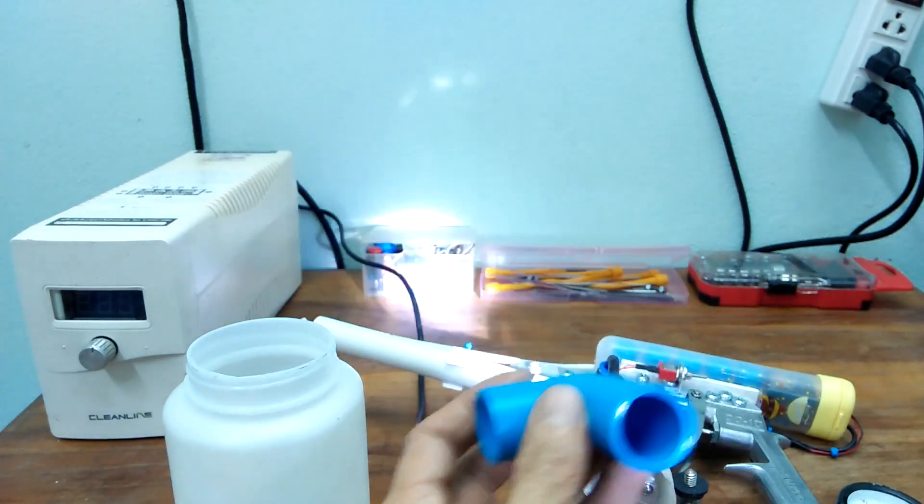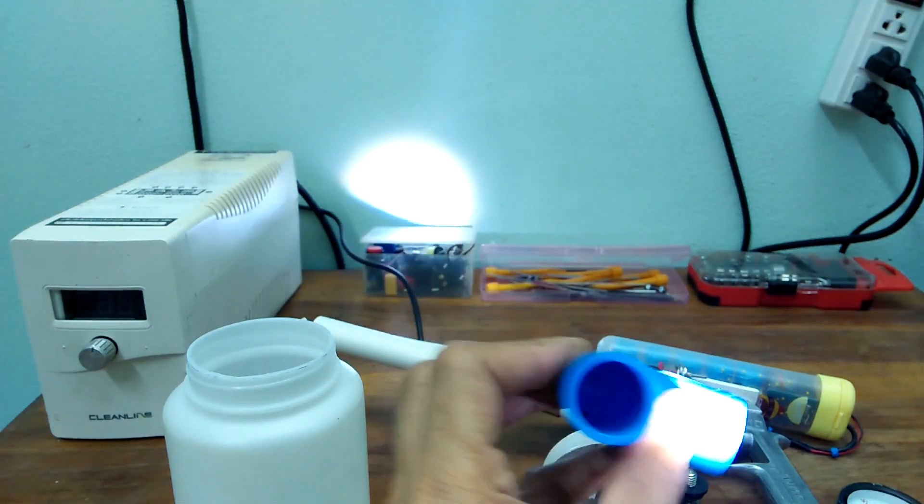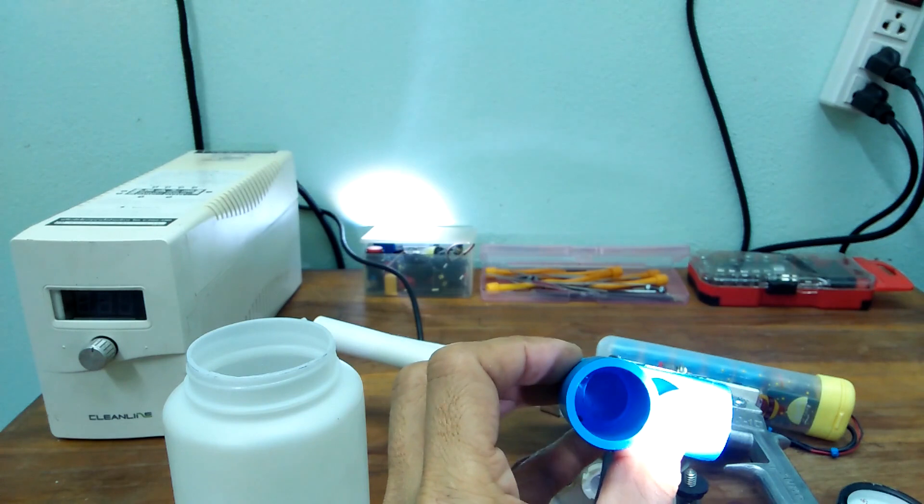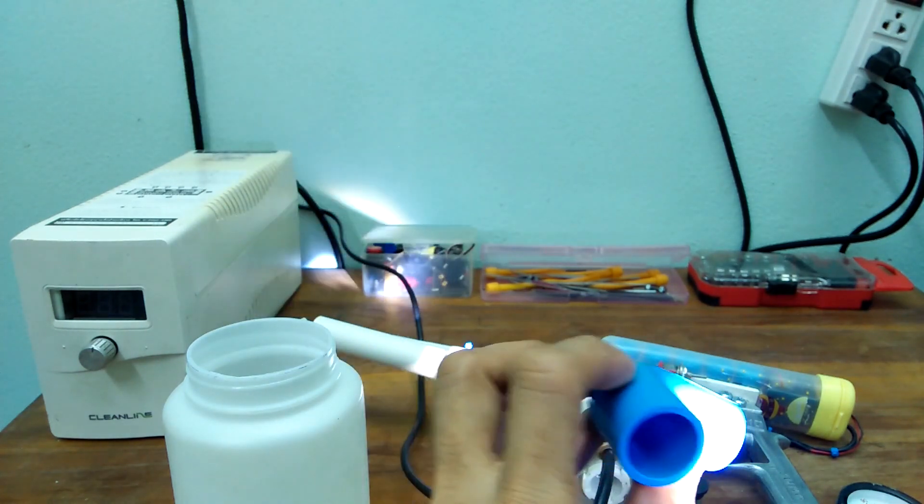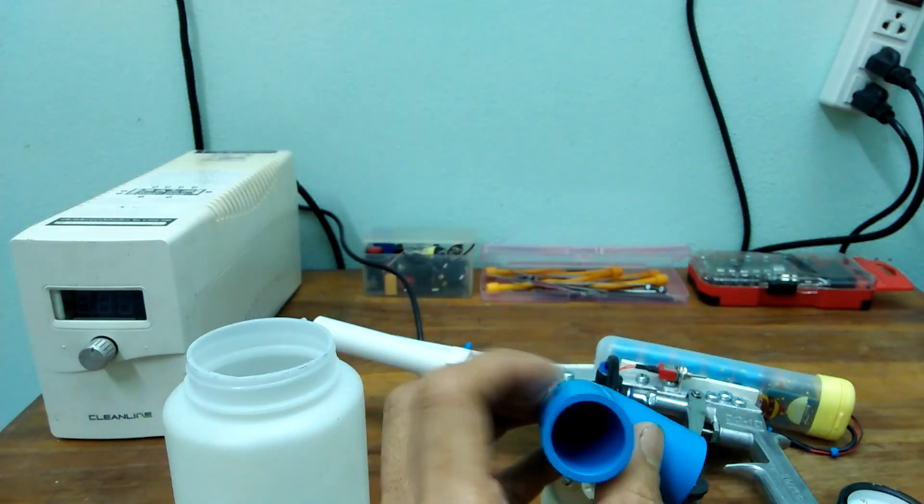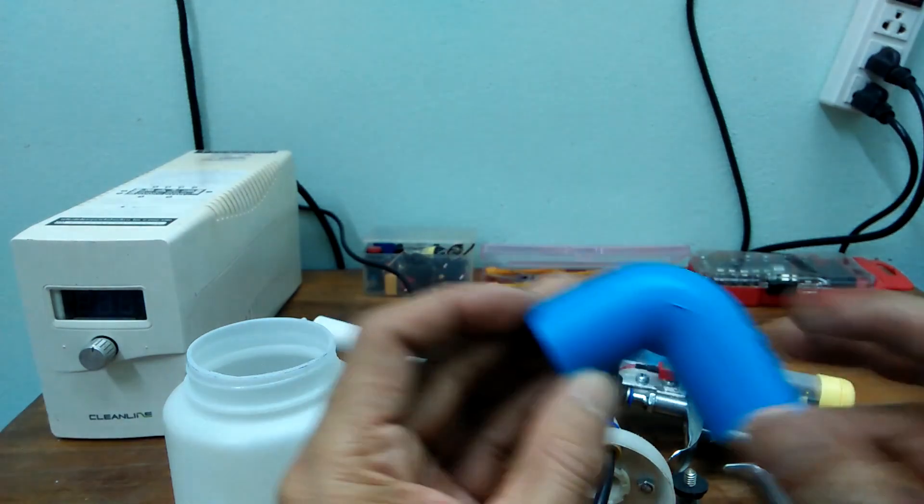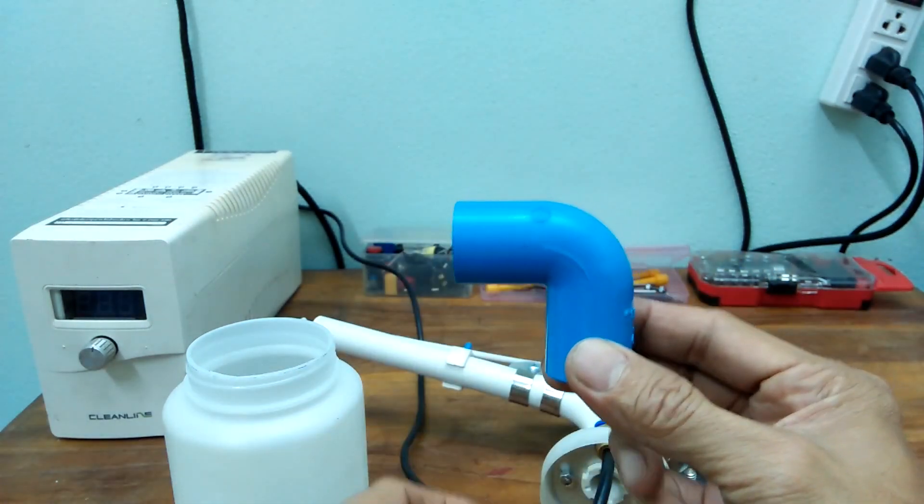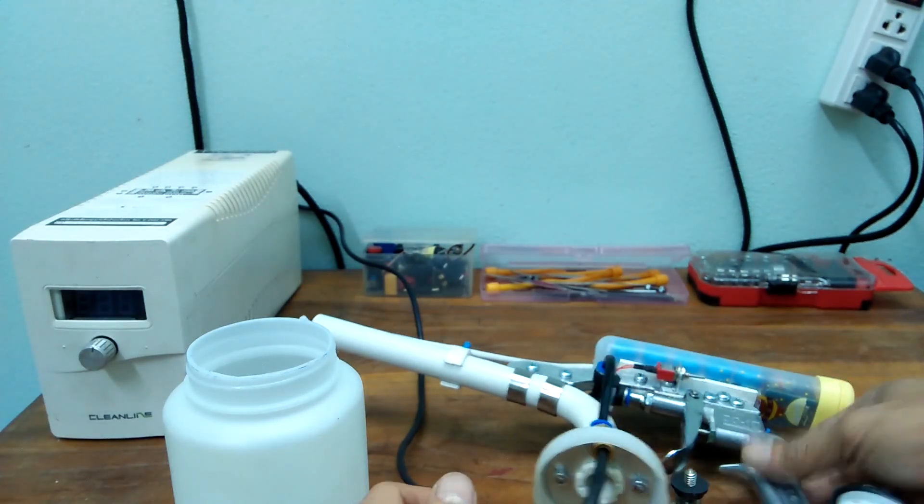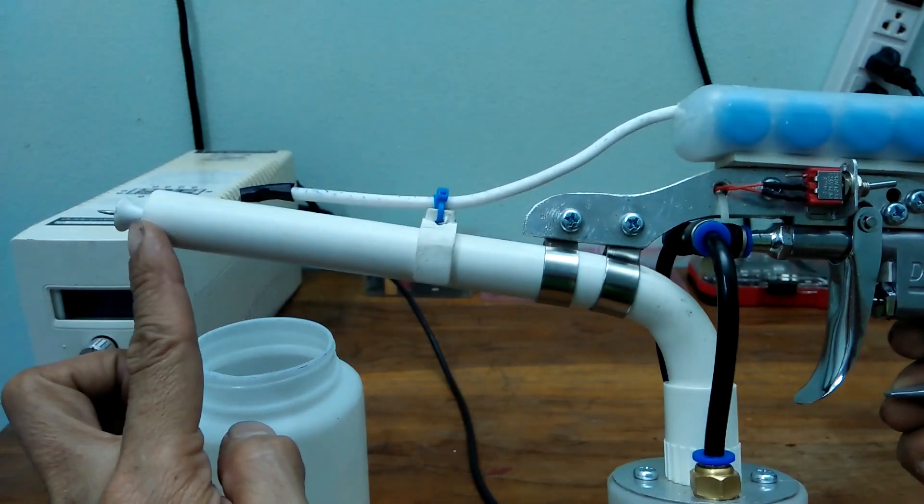On previous gun version, I used this PVC elbow fitting. But as you can see inside, there is a sharp 90 degree corner, and I think that restricts the flow of powder. So I bend the PVC tube instead of using an elbow fitting.